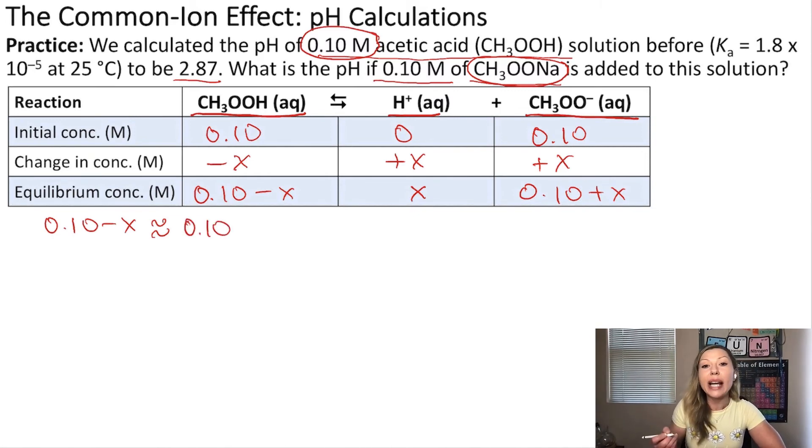So I'm going to assume that 0.10 minus X will approximately equal 0.10. Similarly, I'm going to do that for the CH3COO- ion concentration and say that 0.10 plus X will approximately equal 0.10 mol per liter. All right, let's write out the equilibrium expression.